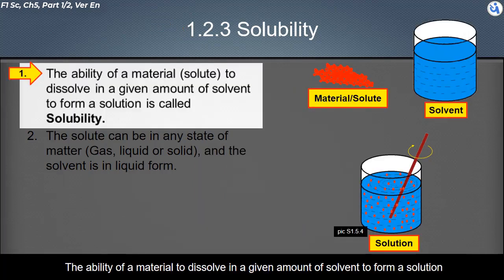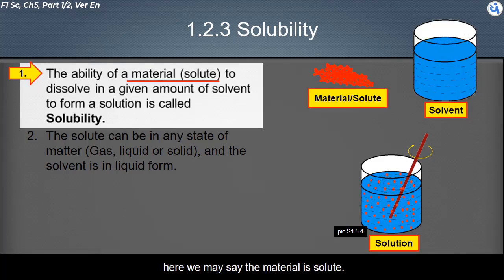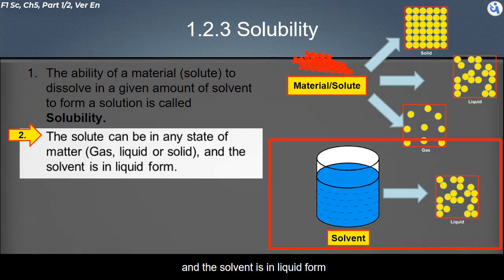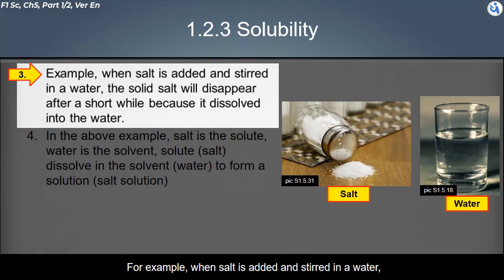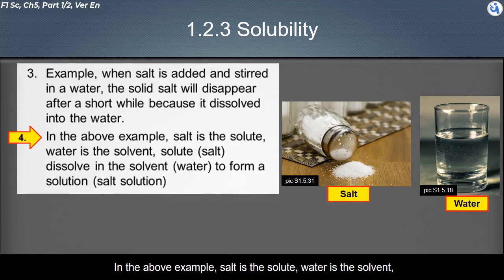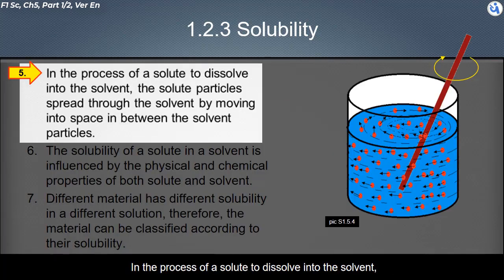This is about the solubility of materials. Solubility is the ability of a material to dissolve in a given amount of solvent to form a solution. The material being dissolved is called the solute, which can be in any state of matter — gas, liquid, or solid. The solvent is always in liquid form. For example, when salt is added and stirred into water, the solid salt will disappear after a short while because it dissolved into the water. In this example, salt is the solute and water is the solvent, and together they form a solution — salt water.